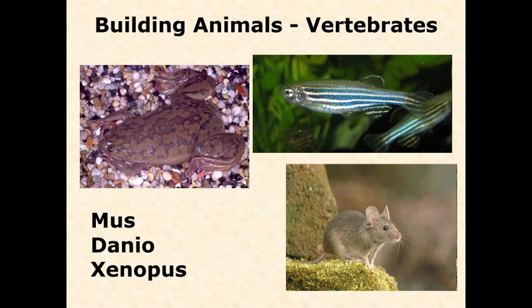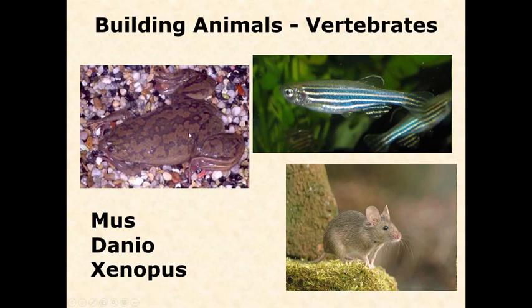There are a number of model organisms used for development in vertebrates. The mouse is a really good model for higher vertebrate development, but it's very difficult to work with because mammals maintain their embryos internally. You have to sacrifice the mother and embryos at the correct stage. With Danio, commonly called the zebrafish, and Xenopus, the African clawed frog, they lay their eggs so development occurs externally, and they also have far more offspring than mice do.